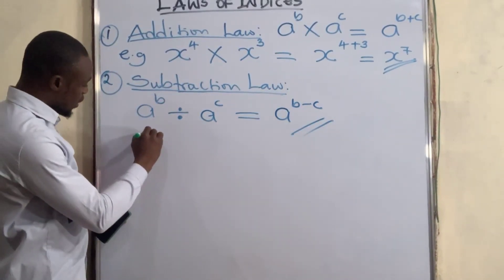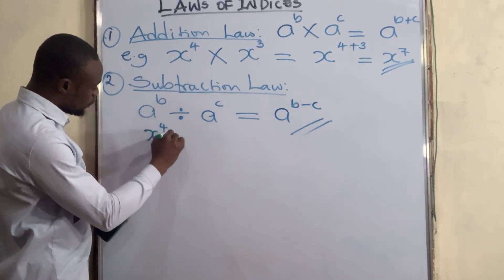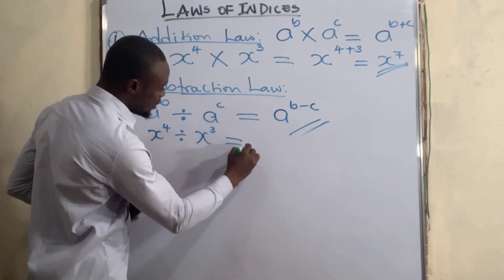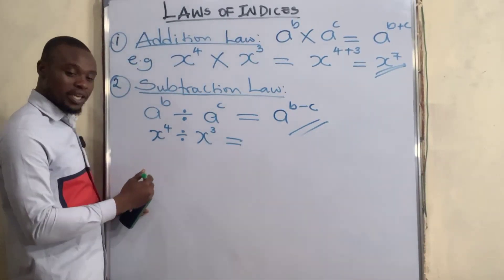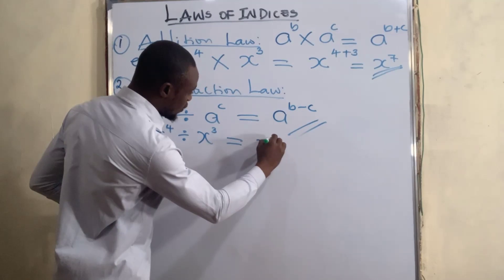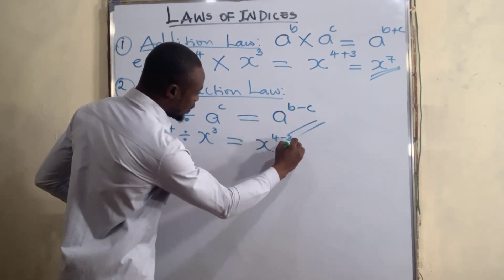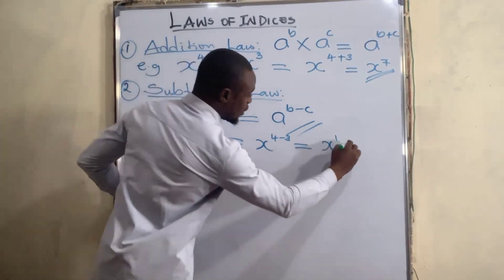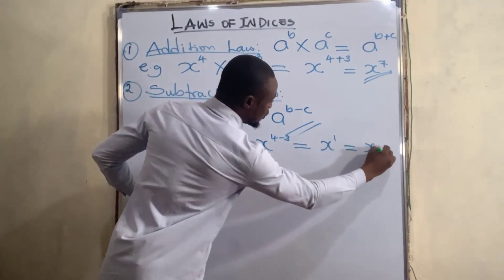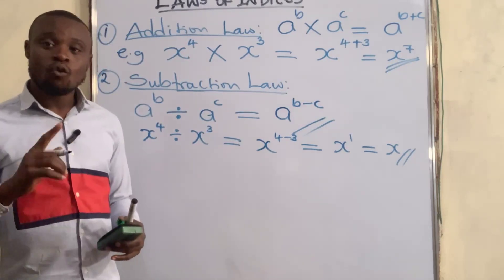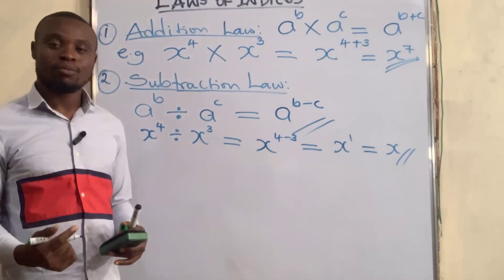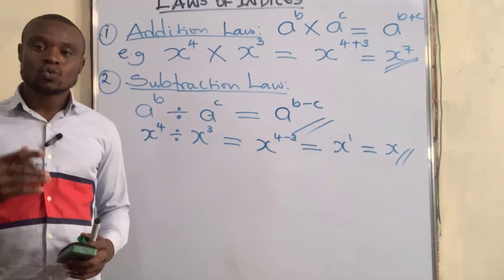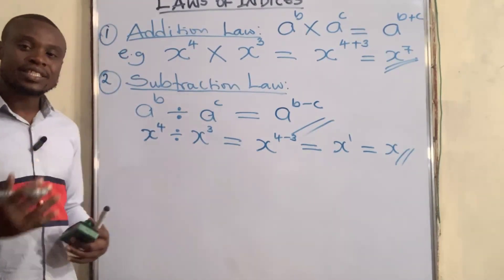For example, x to the power of four divided by x to the power of three — we pick one x and subtract the powers: four minus three gives x to the power of one, which is just x. Also, any number to the power of one is that same number. And any number to the power of zero is equal to one, which leads us to the third law.